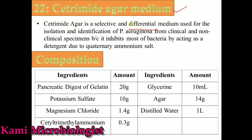Cetramide medium is a selective medium — it is not a differential medium. It is a selective medium which we specially use for the identification and isolation of Pseudomonas aeruginosa from clinical and non-clinical specimens. It mostly inhibits the growth of other bacteria because it contains the quaternary ammonium salt which can inhibit all bacterial growth except Pseudomonas aeruginosa.